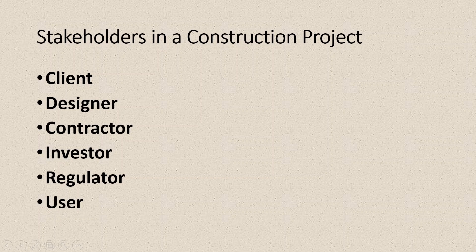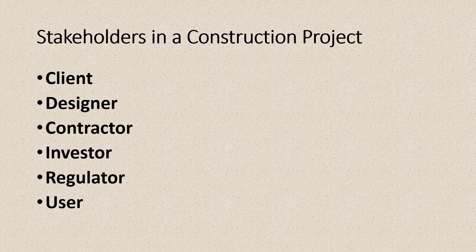Then comes the user. Sometimes the user and client may be the same person — if you are constructing a house for yourself, you are both client and user. But for a highway project, the client is generally the government while the users are the public. In an indirect sense the users are the clients, since the highway is constructed using public money, but the government is the representative of the public, so in that case client and user may be different people.